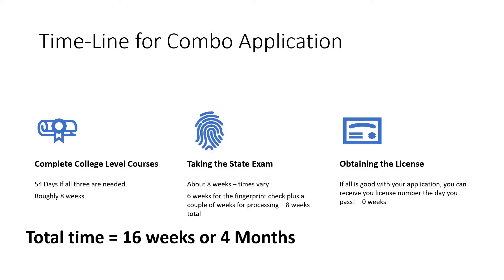What is the timeline for the combo? Some of it is the same — 54 days for the three college-level courses. It's still going to take about eight weeks to get a test date, but during those eight weeks you'd be doing the fingerprint processing. When all is good and you pass the exam, you get your license right then and there — no weeks to wait. The total time could be as low as 16 weeks, or four months, if you use the combo.